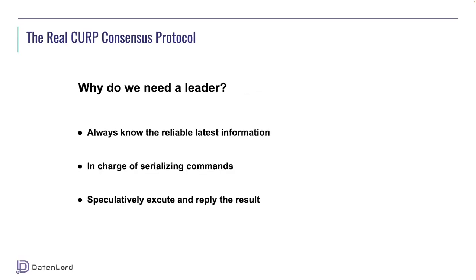We have a leader in our cluster — why do we need it? Each replica may have a different spec pool since they may receive client requests in different order. So which order should we serialize the commands? We use the leader to decide. The leader always knows the reliable latest information, because the client can only consider a command committed after it receives the leader's reply. Other replicas can have different spec pools — this doesn't matter.